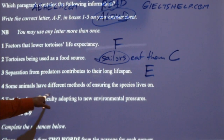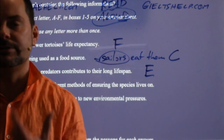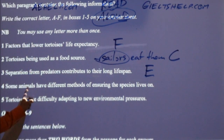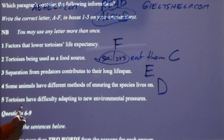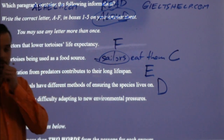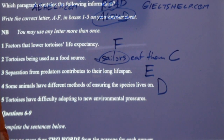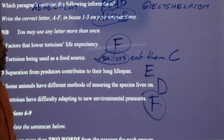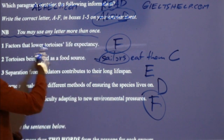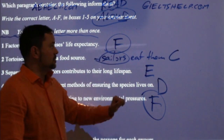Number four: 'Some animals have different methods of ensuring the species lives on.' That was about some animals being poisonous, some running really fast — which paragraph? Pretty sure that was D. Number five: 'Tortoises have difficulty adapting to new environmental pressures' — which paragraph talks about the fact that I'm a tortoise having problems because I'm so slow and these people and animals that were never here before? That was the conclusion — F. Notice how F is used twice. It tells you here: note, you may use any letter more than once. So paragraph A and B were not in there, but paragraph F was there twice. F, C, E, D, F — those were the correct answers.